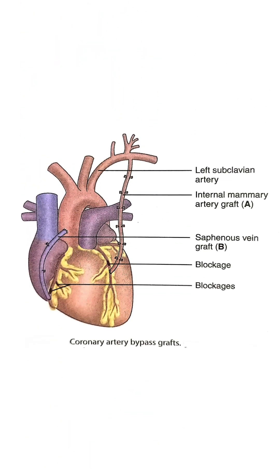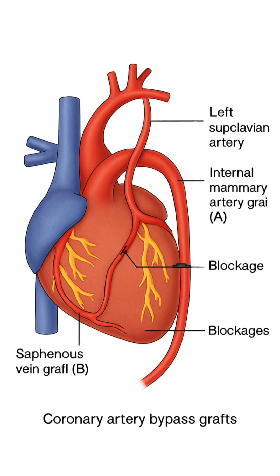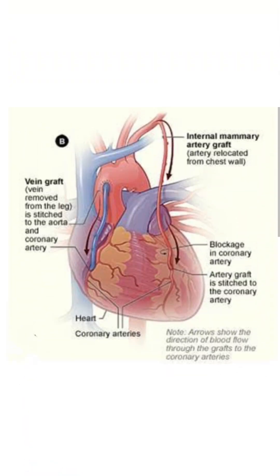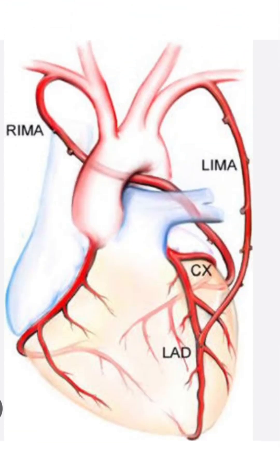Main components in the diagram: the left subclavian artery delivers blood to the left arm and provides a source for arterial grafts. The internal mammary artery graft (A) is a preferred arterial graft, often left attached at one end in the chest and sewn to a coronary artery beyond the blockage. The saphenous vein graft (B), harvested from the leg, is sewn from the aorta to a coronary artery downstream of the blockages. Blockages represent the locations in the heart's arteries where plaque disrupts blood flow.